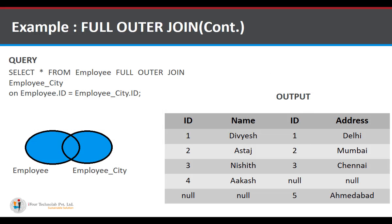The full outer join query will show all the data from both tables — that means matched rows and unmatched rows from both the employee table and employee_city table. In the Venn diagram, the whole diagram is shown in blue, meaning all data will be displayed.